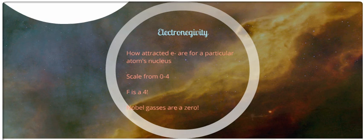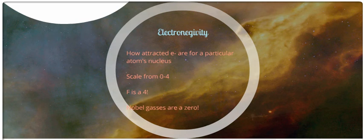Lastly, electronegativity — how well an atom shares its electrons with another atom — is based on the attraction of the electrons for that atom's particular nucleus. It's a scale from zero to four, with four being the highest and zero the least. Four means an atom shares its electrons almost not at all, and zero means that atom doesn't even realize it's sharing. Noble gases are zero because they never, or rarely, react with anything, and therefore are not included on this scale.